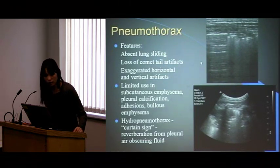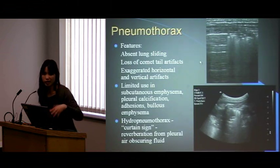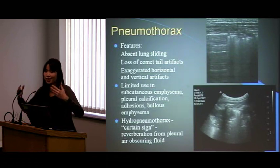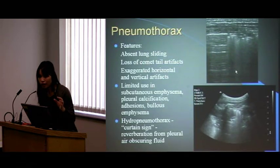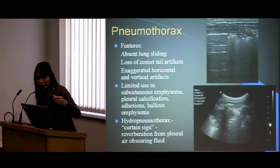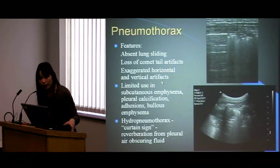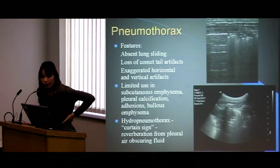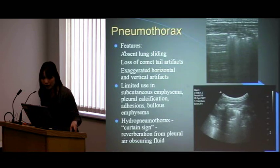Lastly, pneumothorax: we've seen the normal lung sliding sign, but with a pneumothorax — which you might miss on a supine chest X-ray in ICU patients — look for more subtle signs. The lung doesn't slide much, and the comet tail artifacts from the interlobular septa are absent. You also get exaggerated horizontal reverberation artifacts because there's an extra layer of air. Limitations include subcutaneous air, calcification, and emphysema.